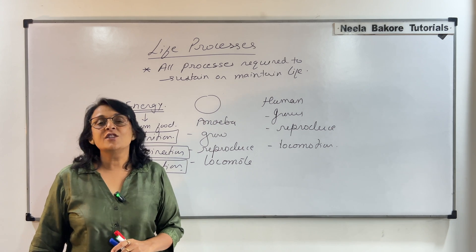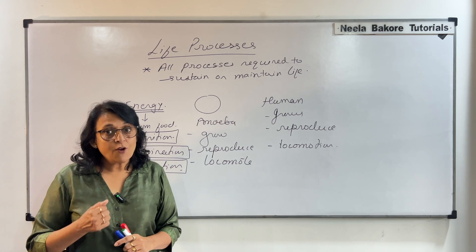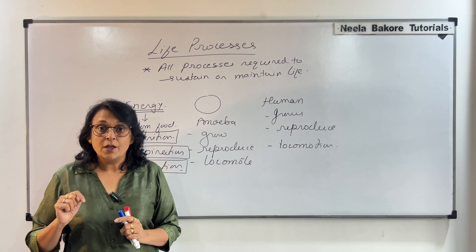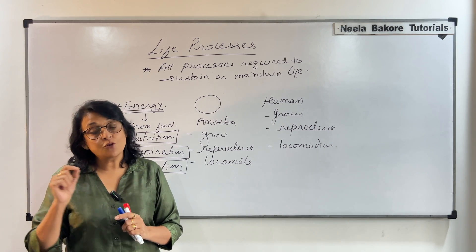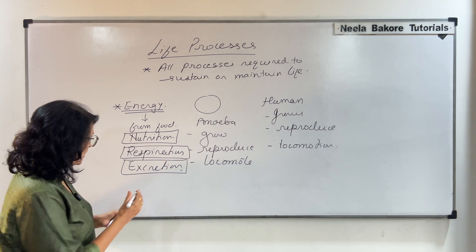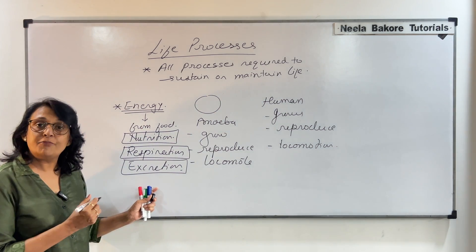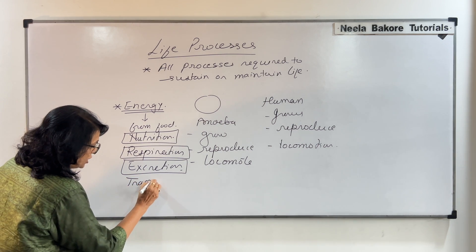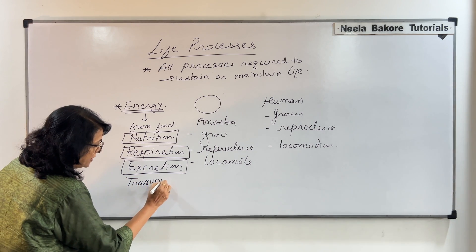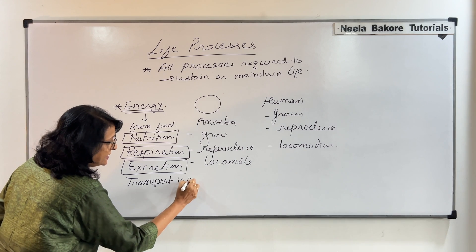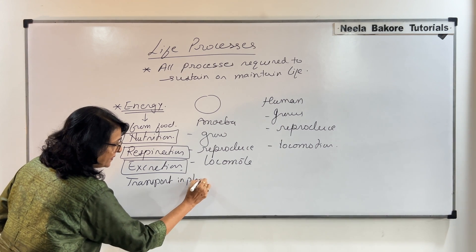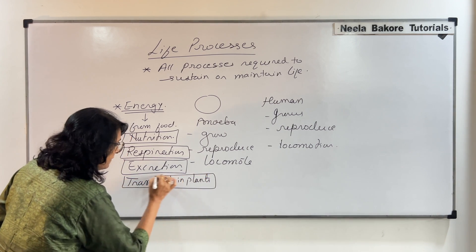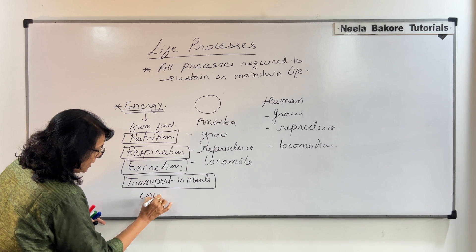What happens in case of plants? Plants also need oxygen — this oxygen has to be taken, the food has to be taken. So there is one more life process which can be termed as transport in plants, or in case of animals, we will call it circulation.